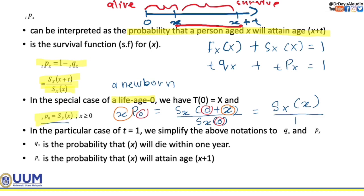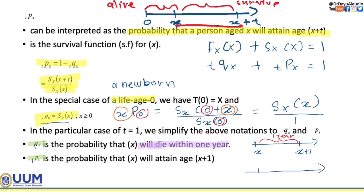When t is equal to 1, we don't have to write down the 1 in front — we just leave it blank, knowing that t equals 1. So qx is the probability that a life aged x will die within 1 year. If we draw the timeline, it goes from x to x plus 1, covering only 1 year. Similarly for tpx, from x to x plus 1, covering only 1 year.